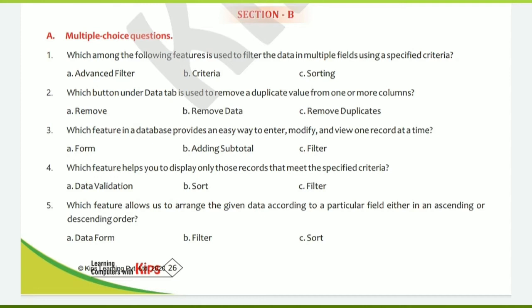Fourth: which feature helps you to display only those records that meet the specified criteria? Answer: Filter. Fifth: which feature allows you to arrange the given data according to a particular field, either in ascending or descending order? Answer: Sort. Sorting is helpful for arranging data in ascending or descending order. Summary: first advanced filter, second remove duplicates, third form, fourth filter, fifth sort.